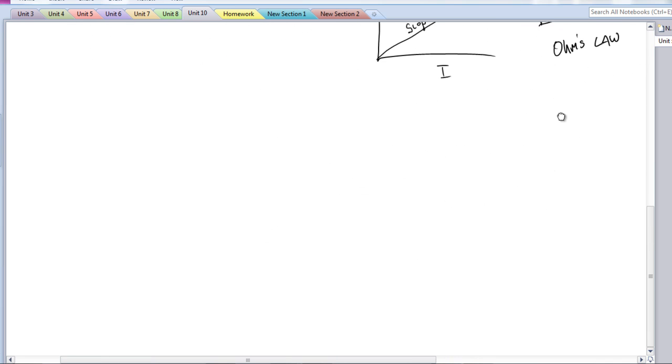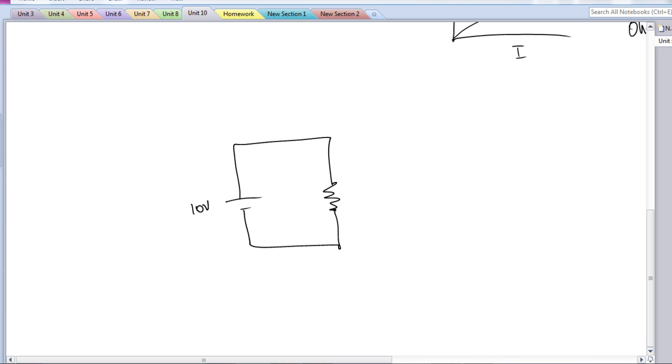So what is really nice about knowing something like this is I can draw in a circuit that looks something like this where I have 10 volts here. And I know my resistance, let's say, is 5 ohms. And I can ask a couple of questions. I can ask, first off, what is the voltage across this resistor?